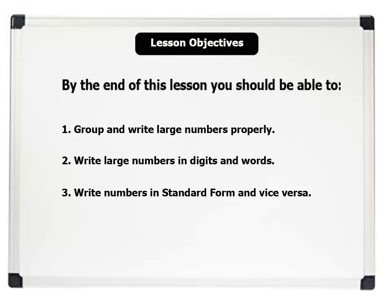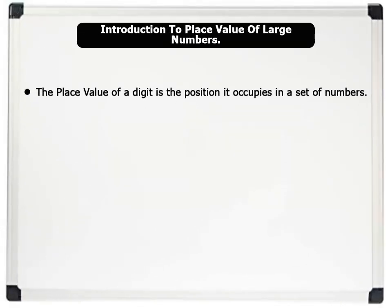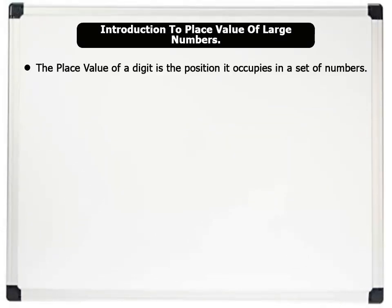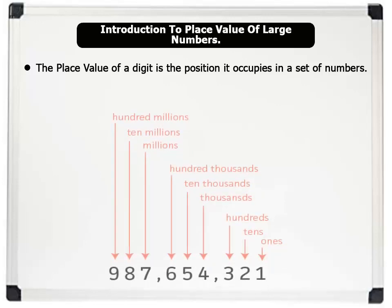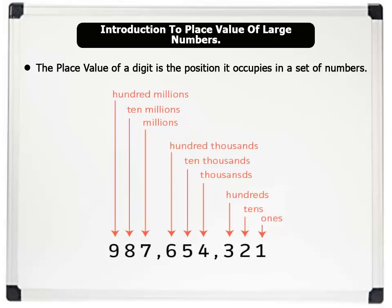The place value of a digit is the position it occupies in a set of numbers. The image on the board shows the place values: nine in hundred millions, eight in ten millions, seven in millions, six in hundred thousands, five in ten thousands, four in thousands, three in hundreds, two in tens, and one in ones.